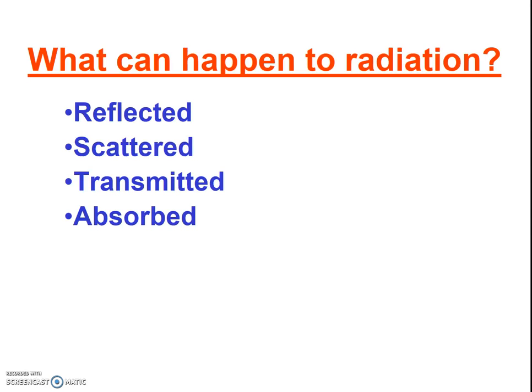Radiation can also be scattered. When light hits particulates in the atmosphere, it can get scattered in all directions, but again, the wavelength doesn't change. Radiation can also be transmitted. For example, visible light is easily transmitted through a window. Though thankfully, most ultraviolet light is not transmitted, so you don't get a sunburn inside the house. Similarly, infrared is not generally transmitted through windows either. Different materials and substances have different abilities to transmit radiation.